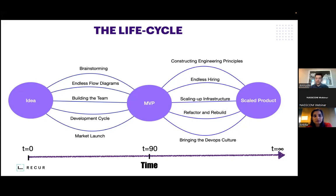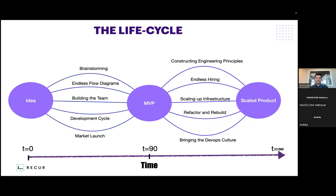Once your MVP gets launched, there are times it might not succeed. But most of the time, when it does get successful, the scale is not what we predicted — it is like 10x or 20x of what we predicted, not just 2x or 3x that a normal scaling architecture would handle. As soon as we hit that scale, we move to scaling problems. This is the time when we start thinking about constructing engineering principles, designing microservices that can scale, focusing on the right database.